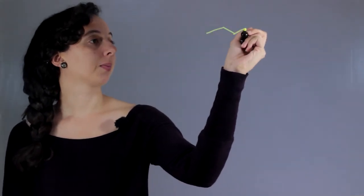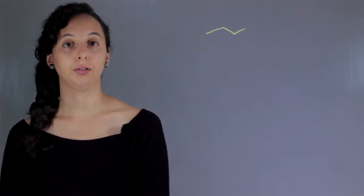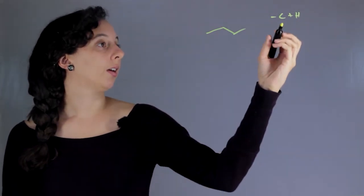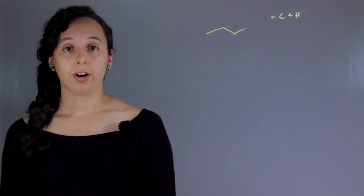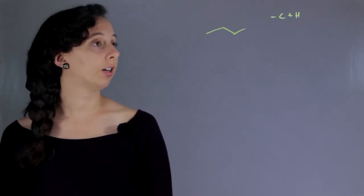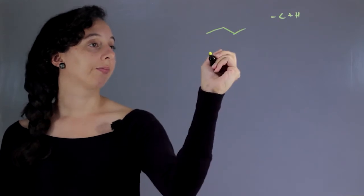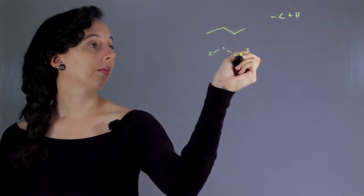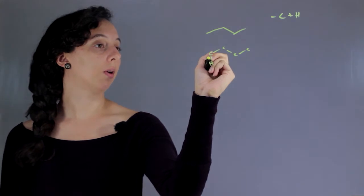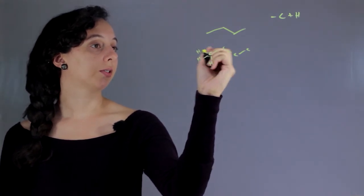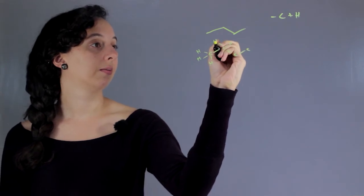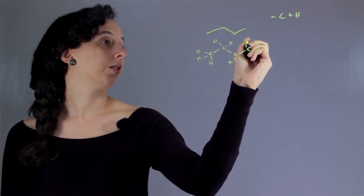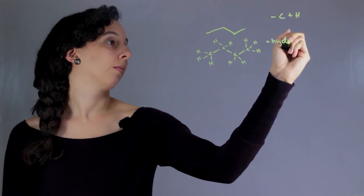A hydrocarbon is anything that contains only carbon and hydrogen — that's it, those are the only requirements. It just has to have only carbon and hydrogen. This is a stick structure, and if we draw it out, every bend or end is a carbon. Carbon always makes four bonds, so you have to fill in the rest with hydrogens. The ones on the end have three hydrogens, the ones in the middle have two. So this is a hydrocarbon.